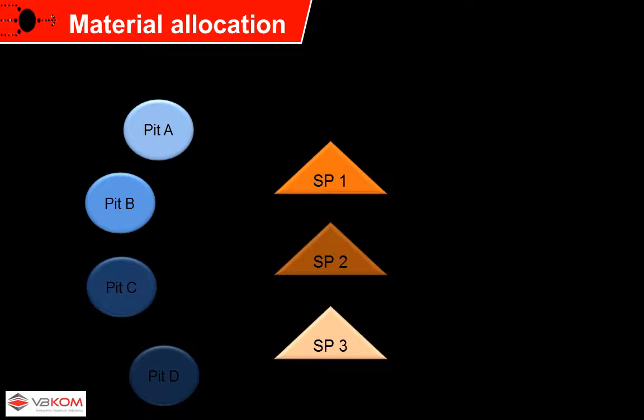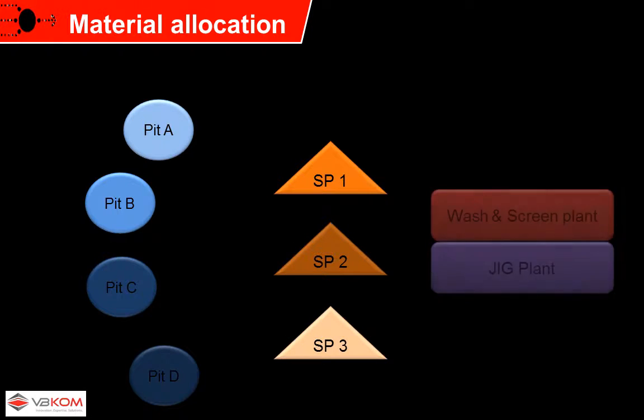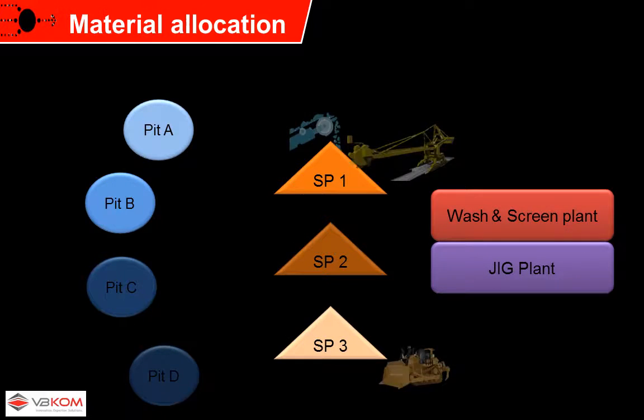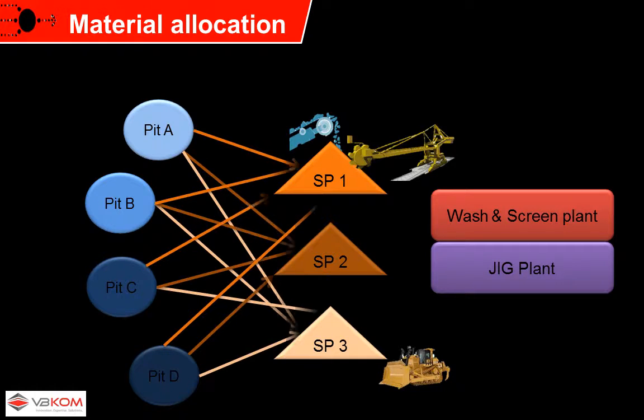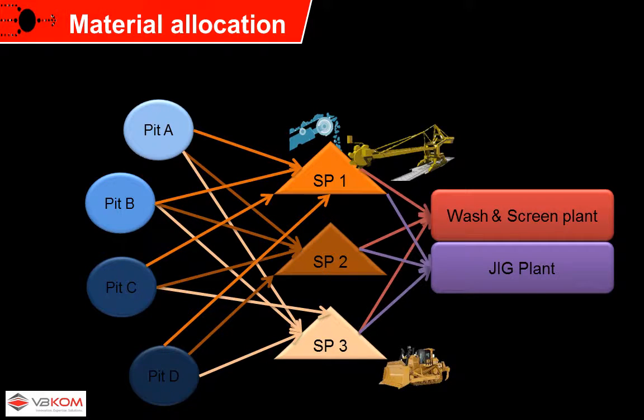Material allocation is a process that often has complex scenarios. Your operations may have multiple pits, multiple stockpiles, more than one processing plant and a lot of equipment involved. This means that there may be thousands of possible options of how to manage the material flow.